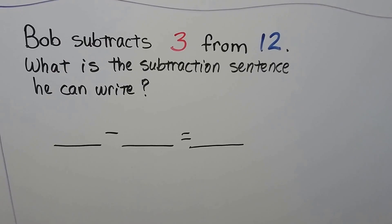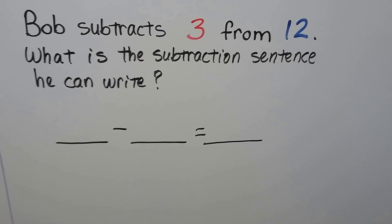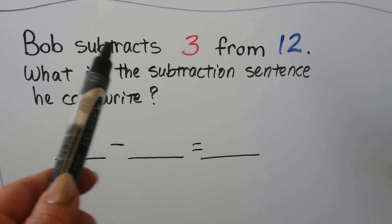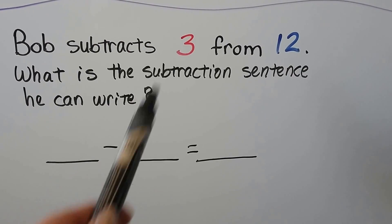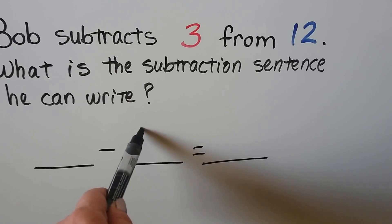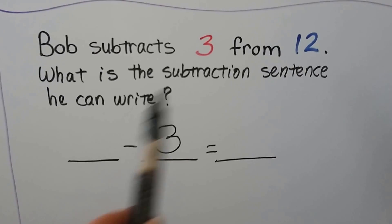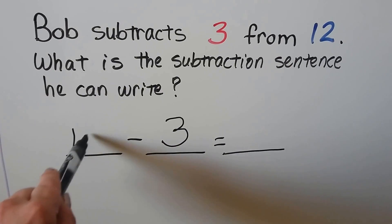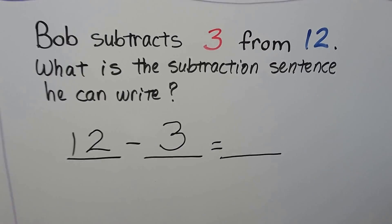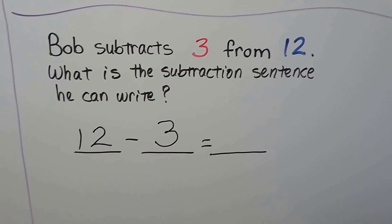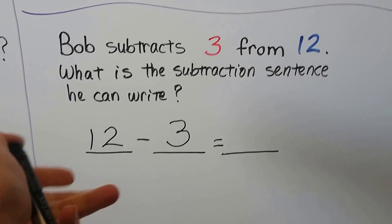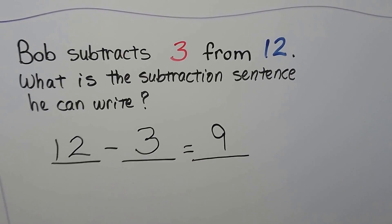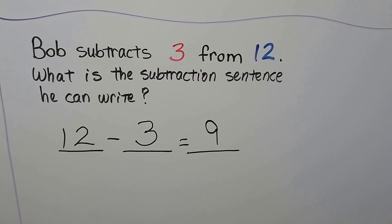Bob subtracts 3 from 12. What is the subtraction sentence he can write? It says Bob subtracts 3, meaning he's taking away 3 — that's the minus. He's going to minus 3 from 12, so the 12 is going to be the minuend. We count back: 12, 11, 10, 9. 12 minus 3 is equal to 9.